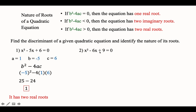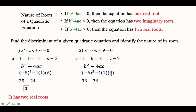For given number 2: x squared minus 6x plus 9 is equal to 0. Write down a, b, c: a is 1, b is negative 6, c is 9. Write the discriminant and substitute: negative 6 squared minus 4 times 1 times 9. Negative 6 squared is 36, and negative 4 times 1 times 9 is negative 36. So 36 minus 36 is 0. This 0 falls in our first indicator, which tells us this quadratic equation has only one real root.